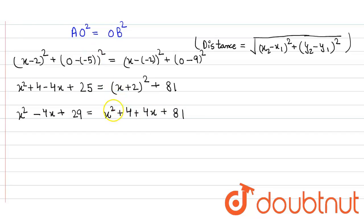So this x² will simply cancel out, and on further simplifying, we get on the right-hand side 4x plus 4x, that will be 8x, and this 81 and 4 becomes negative when it goes to the left-hand side, so -4 - 81 + 29.